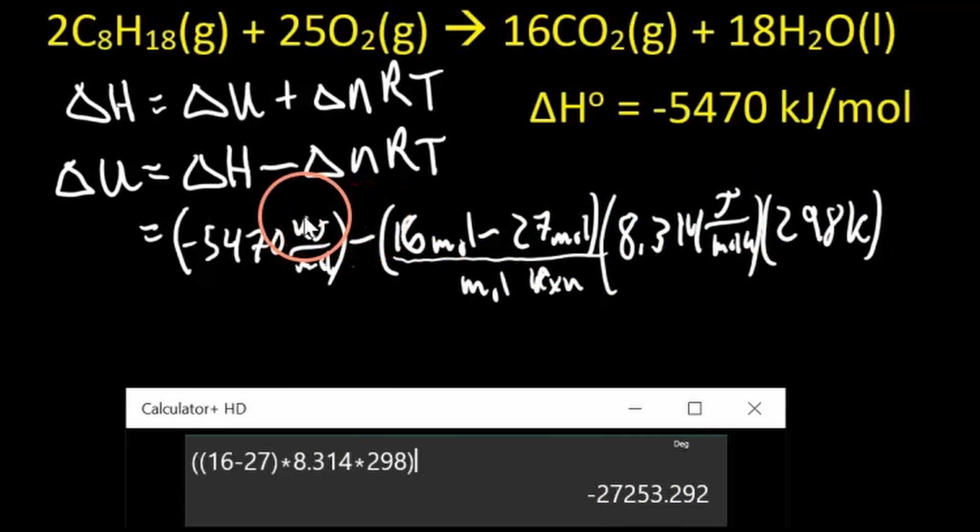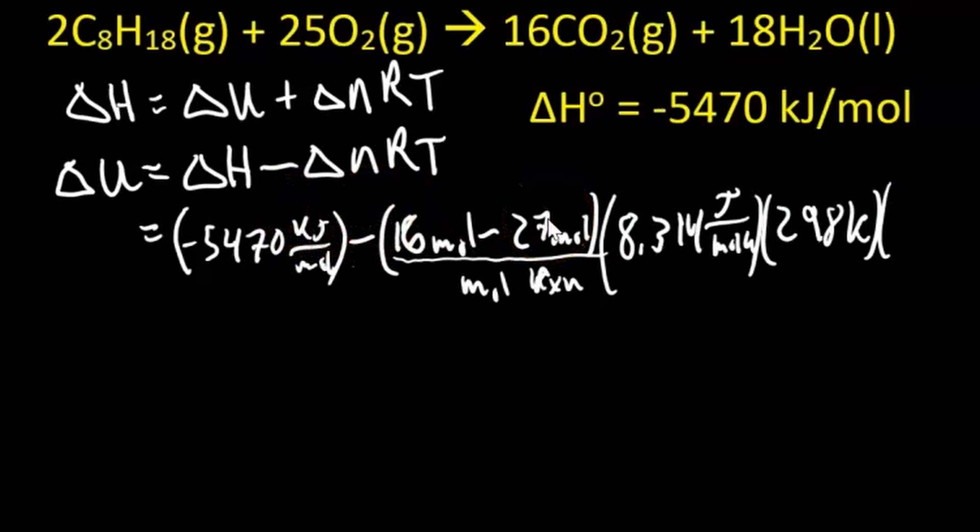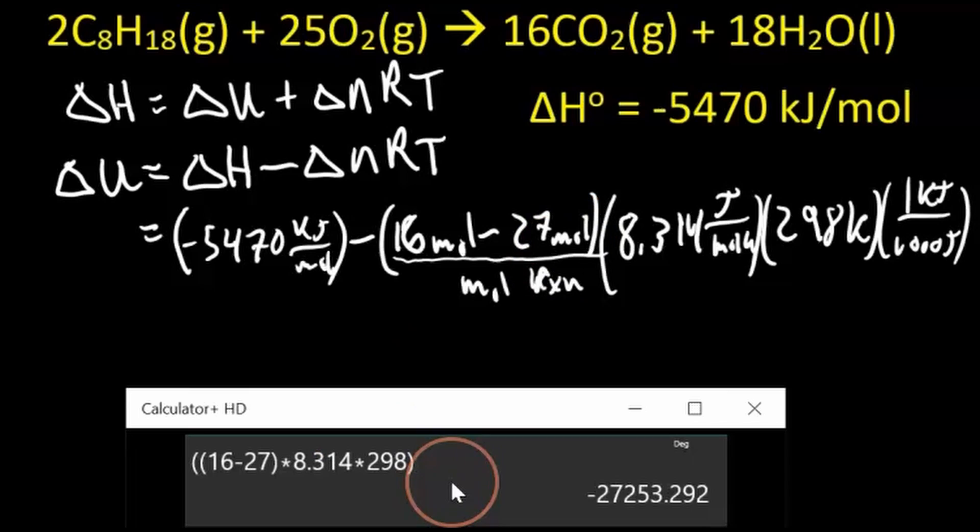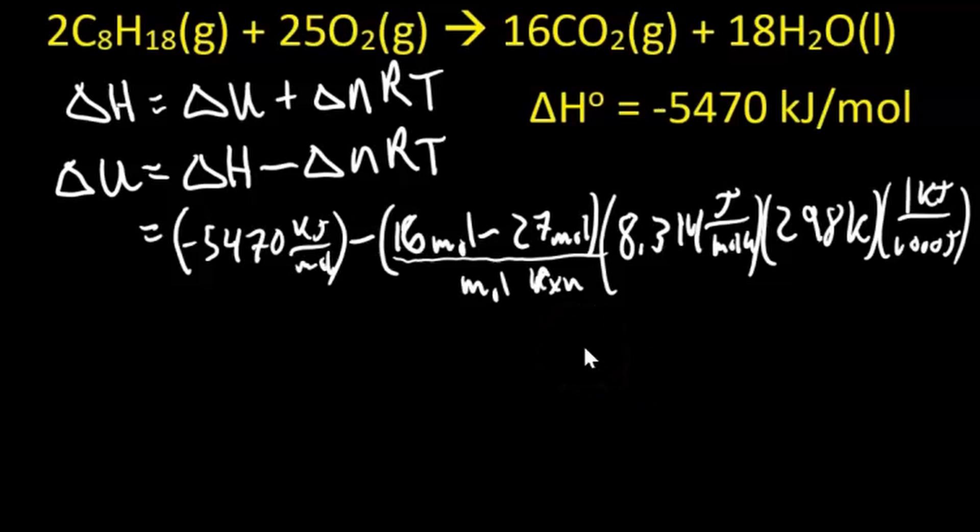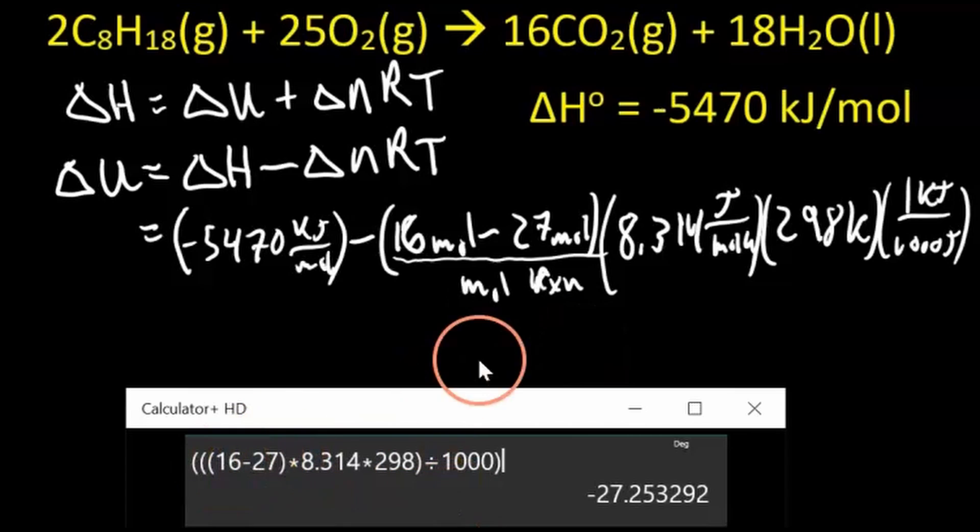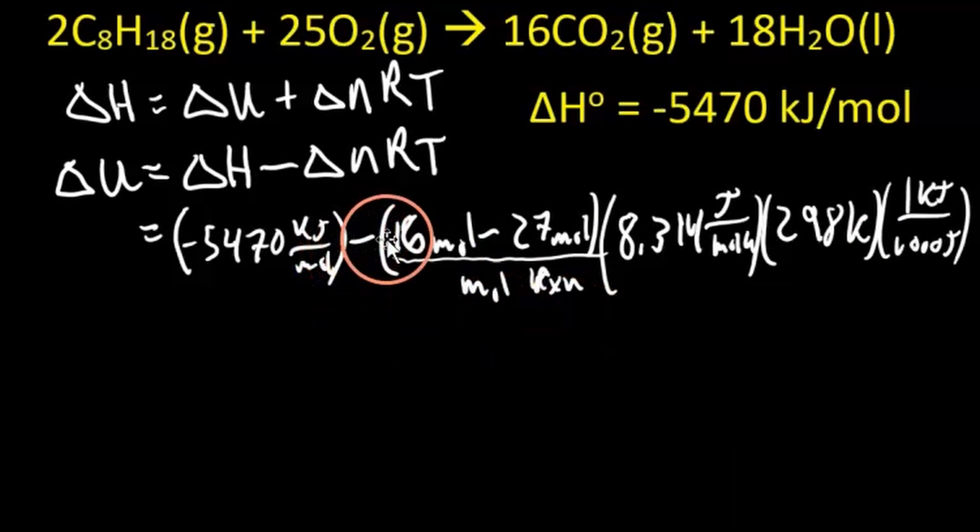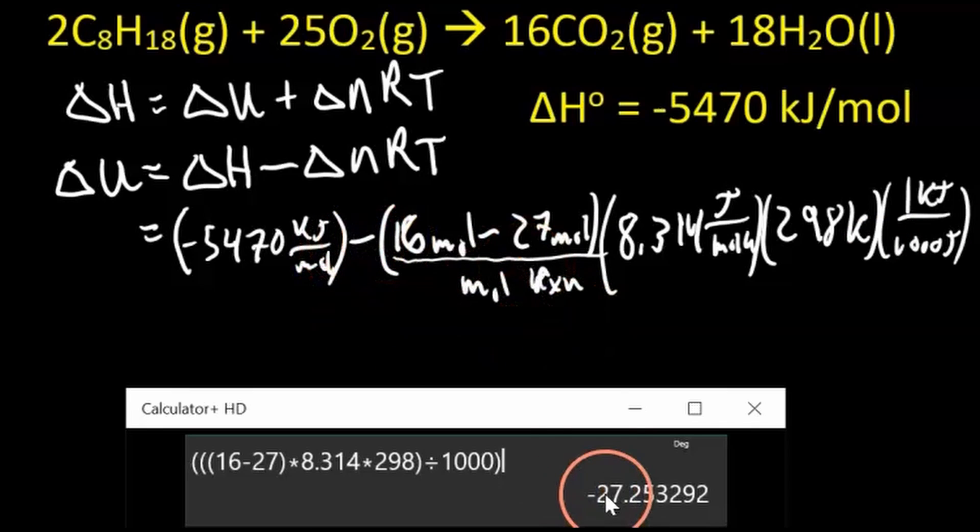Now this is in joules, right? This is in joules, so if we want it to be in kilojoules, we would divide this by 1,000: 1 kilojoule for every 1,000 joules. So I'll do that right now, divided by 1,000, so negative 27.25.